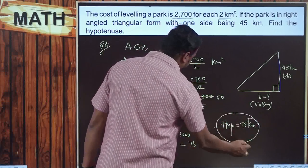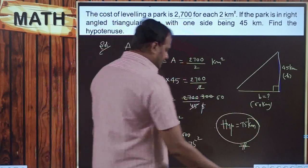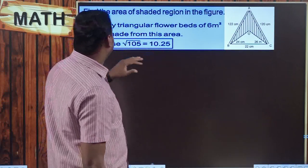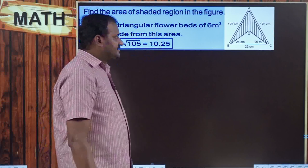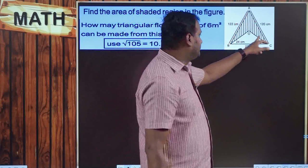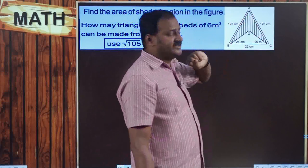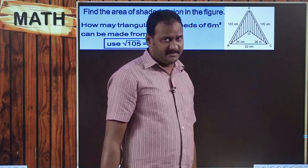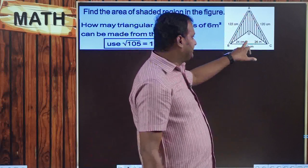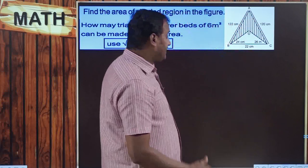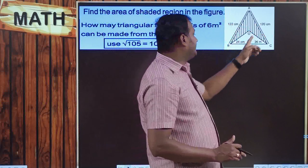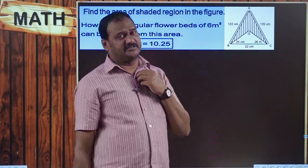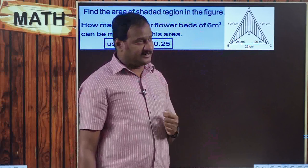This way we can easily answer the problem. Moving on to the next problem: find the area of the shaded region in the figure. How many triangular flower beds of 6 square meters can be made from this area? The area of the shaded region equals the area of the entire triangle minus the area of the unshaded region. Both triangles have all three sides given — triangle with sides 122, 120, 22 and another with sides 24, 26, 22 — so we use Heron's formula.